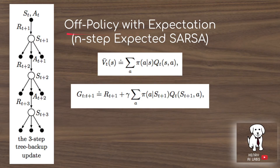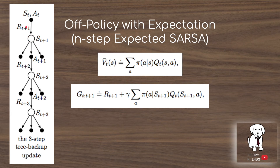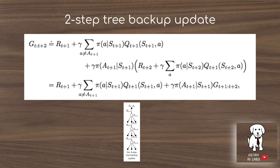For off-policy learning with expectation, similar to expected SARSA, we look ahead and sum the probability of each action given the state times the value estimate of that state-action pair — pi(a|s) times Q(s,a) — over all actions. We now extend this into the future with our n-step algorithm: instead of importance sampling to pick the next action, we take the expectation over the target policy's prediction and use a behavior policy to transition between states.